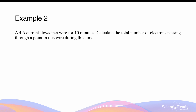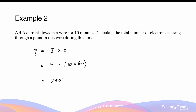A four amp current flows through a wire for 10 minutes. Calculate the total number of electrons passing through a point in this wire during this time. The charge equals the current multiplied by the time: 4 amps, or 4 coulombs per second, multiplied by 10 minutes, which is 600 seconds, gives us 2400 coulombs as the total charge.